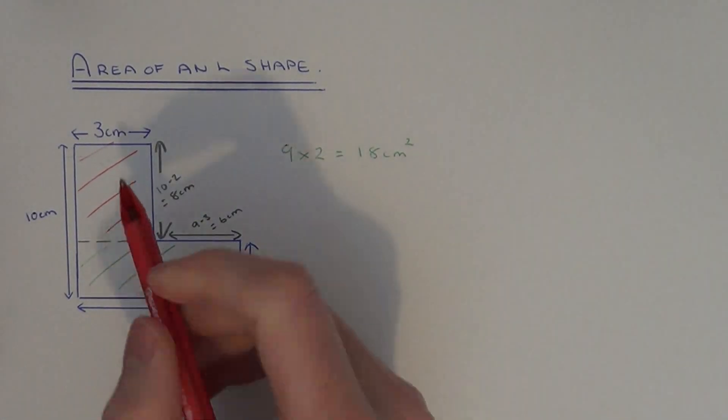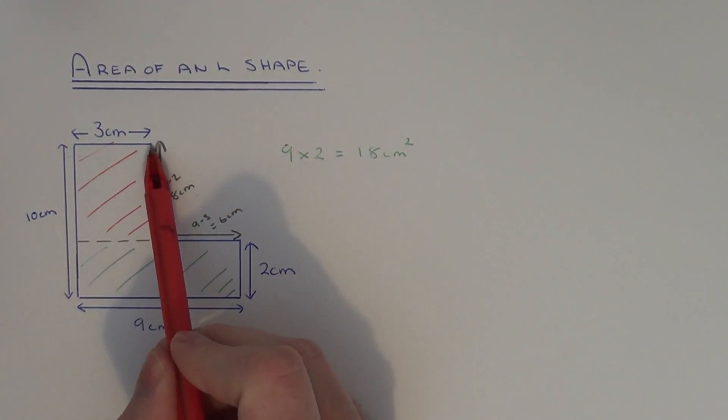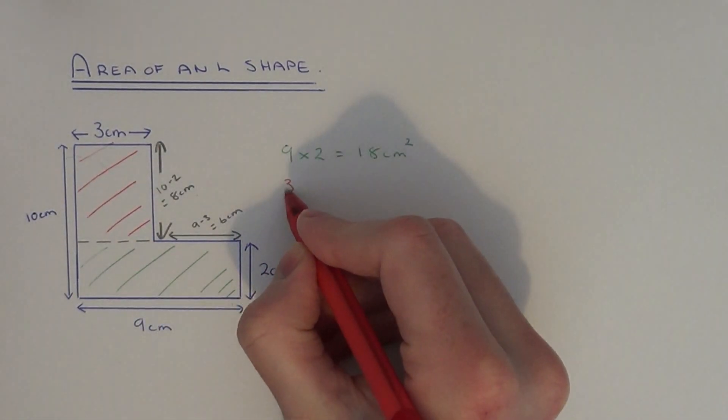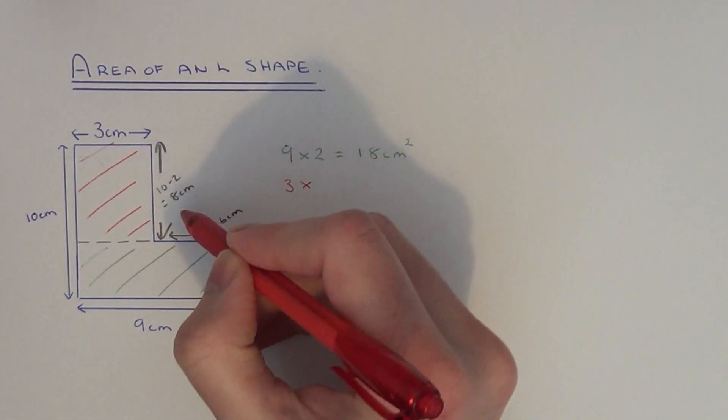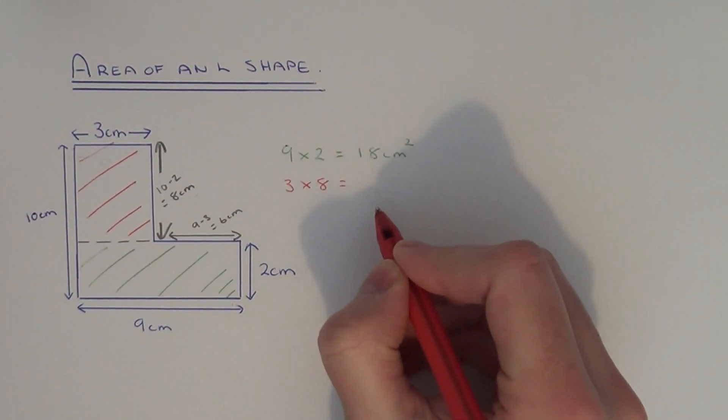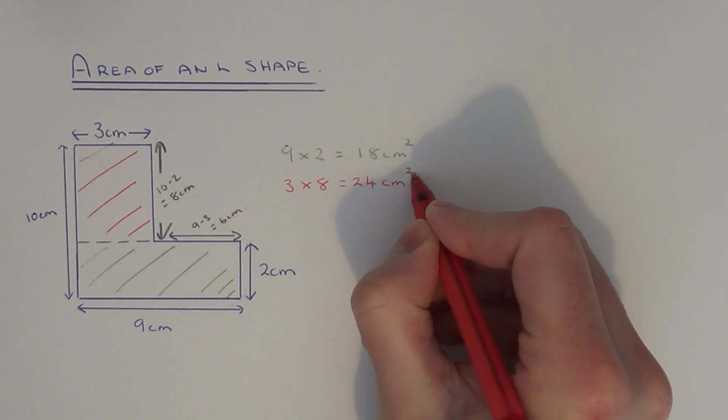Let's work out the area of the red rectangle. Again we need to be careful and multiply the two side lengths together. In this case the base of the red rectangle is three centimeters and the height of the red rectangle is eight centimeters. So if we do three times eight that is twenty four centimeters squared.